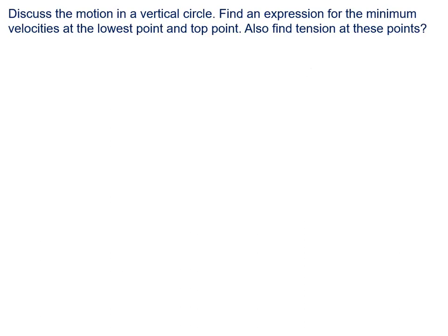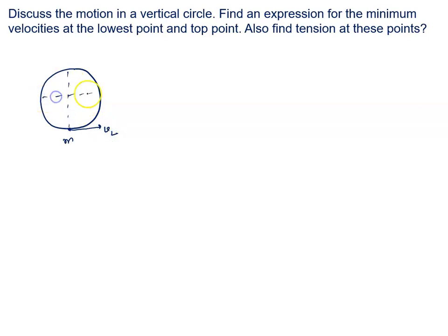Now we will calculate the second part — find the expression for the minimum velocity at the lowest point and the topmost point. Suppose the body is moving in vertical circular motion. This is the lowermost point, and at this point the speed is V at the lowermost point, that is VL. At any instant, let the particle be at some point where the velocity is V, tension is T, mass of the particle is M, and theta is the angle with the vertical as shown in the diagram.